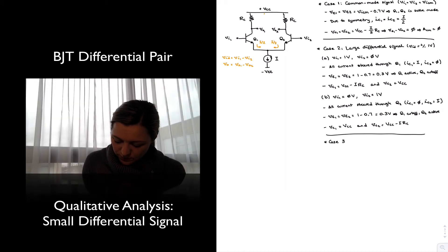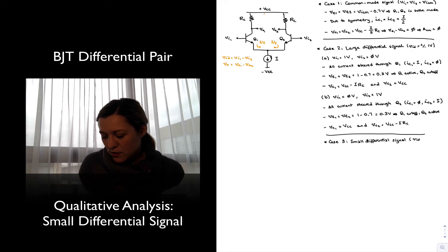Case 3, small differential signal. A small differential signal, as we mentioned, is anything that is smaller approximately than half of the thermal voltage. So, for room temperature, around 12.5 millivolts.